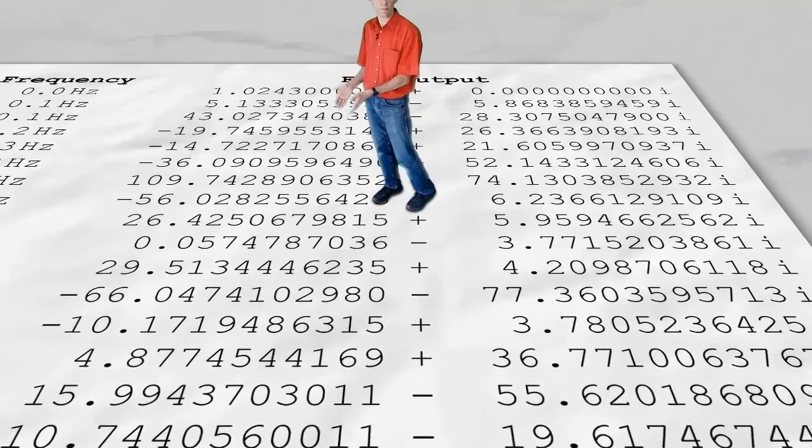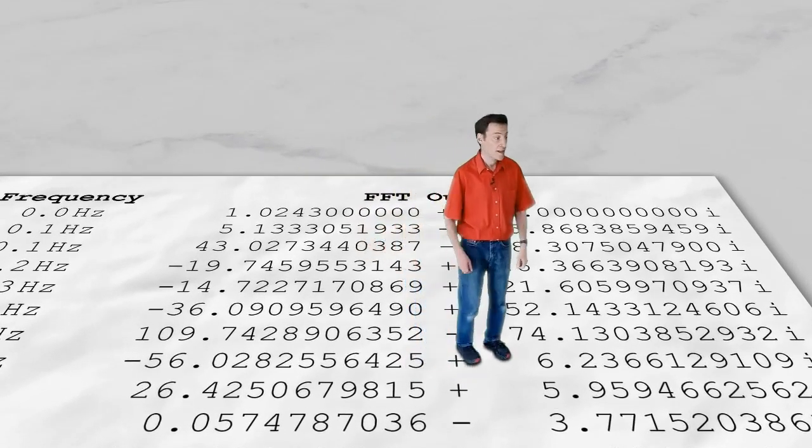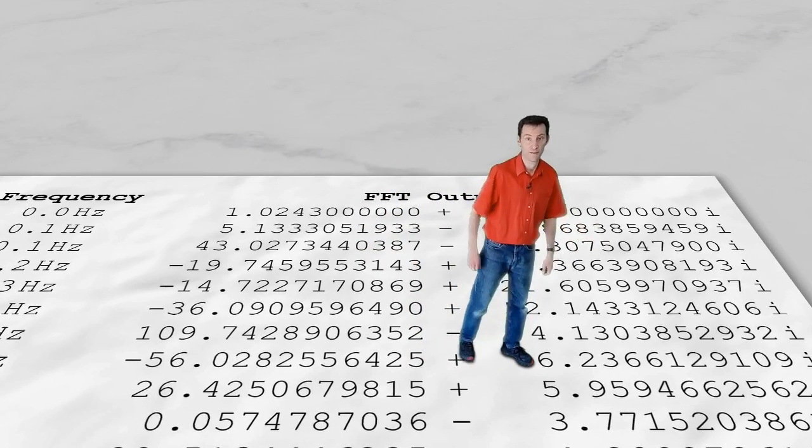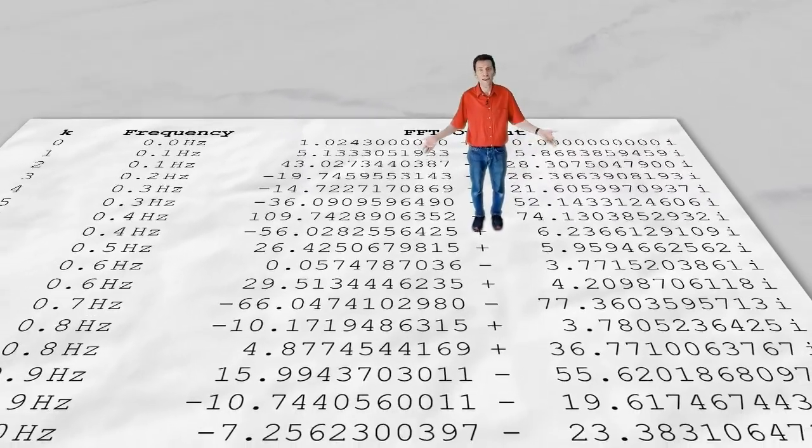The real part of the complex number represents the cosine component. And the imaginary part of the complex number represents the sine component. But what have triangles got to do with all this?